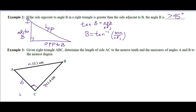Given right triangle ABC, determine the length of side AC to the nearest tenth, and the measure of angles A and B to the nearest degree. We figured out that this has to be the 90-degree triangle.